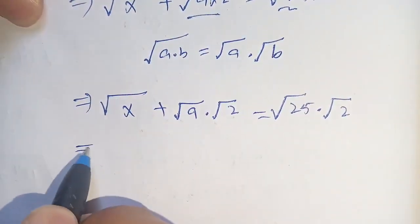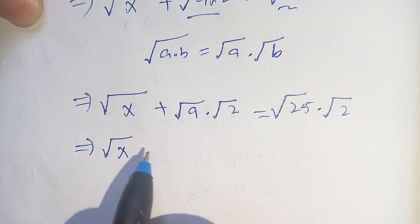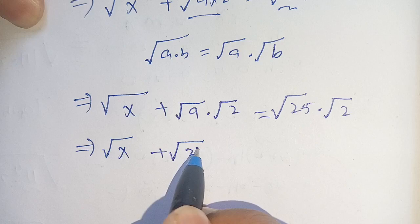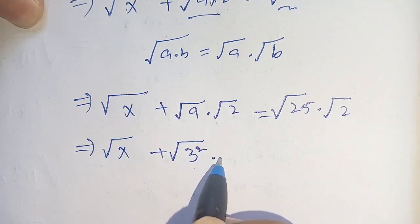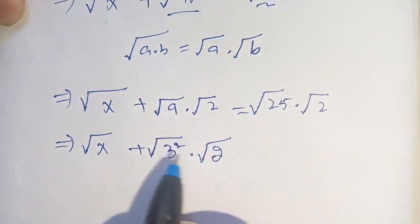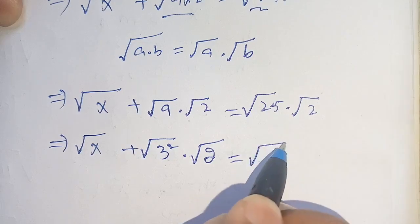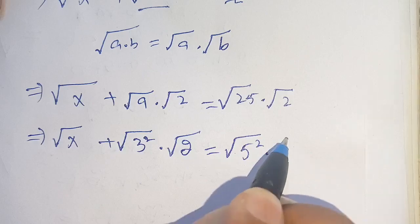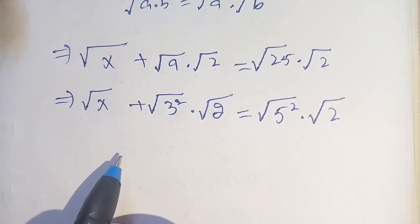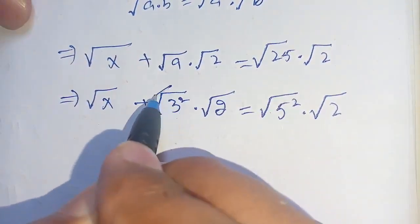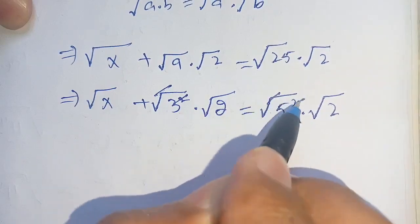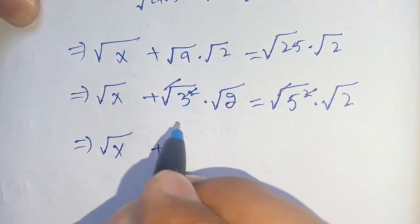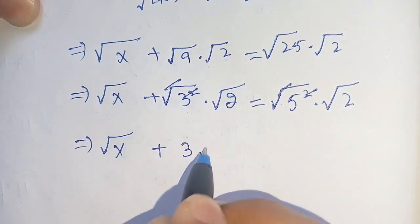In the next step, we write square root of 9 as square root of 3 squared, and square root of 25 as square root of 5 squared. We can then cancel each square with its square root, and we get: square root of x plus 3 square root of 2 is equal to 5 square root of 2.